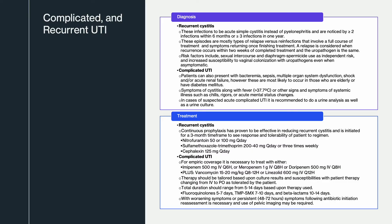Before we get into pyelonephritis, we need to talk about complicated and recurrent UTIs. Recurrent cystitis is an infection of acute simple cystitis occurring greater than or equal to two infections within six months, or greater than or equal to three infections in one year. These episodes are mostly relapses versus reinfections — a relapse is when recurrence occurs within two weeks of completed treatment and the uropathogen is the same. Risk factors include sexual intercourse and diaphragm/spermicide use, as well as increased susceptibility to vaginal colonization even when asymptomatic. Complicated UTI patients can present with bacteremia, sepsis, shock, and/or acute renal failure, and are more likely to be elderly or have diabetes or illness. Symptoms include cystitis symptoms along with fever, chills, rigors, or acute mental status changes.